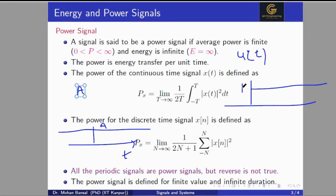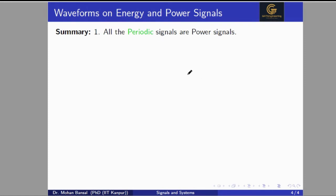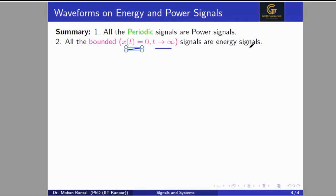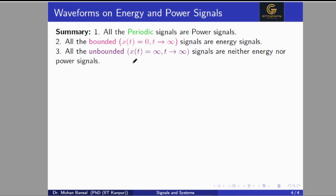To summarize how we visualize and classify signals: all signals with finite value and infinite duration are power signals. If the signal has finite value with finite duration, it is an energy signal. If the signal has infinite value with finite or infinite duration, the signal is neither energy nor power. All periodic signals are power signals. All bounded signals where x(t) equals 0 as t tends to infinity are energy signals. All unbounded signals where x(t) equals infinity as t tends to infinity are neither energy nor power signals.